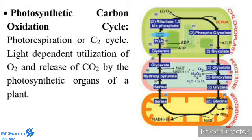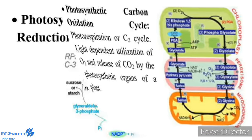Photorespiration or C2 Cycle: The light-dependent utilization of oxygen and release of carbon dioxide by the photosynthetic organs of a plant. Photorespiration is a process of uptake of oxygen and production of carbon dioxide in the light by the photosynthetic tissue. It was discovered by Dicker and Tio in the year 1959, when they observed that the rate of respiration of green leaves is much higher in light than in dark. Photorespiration is an integral and inseparable aspect of photosynthesis. RuBP carboxylase, which is the main enzyme of the dark reaction, also catalyzes another reaction which interferes with the functioning of the Calvin Cycle.